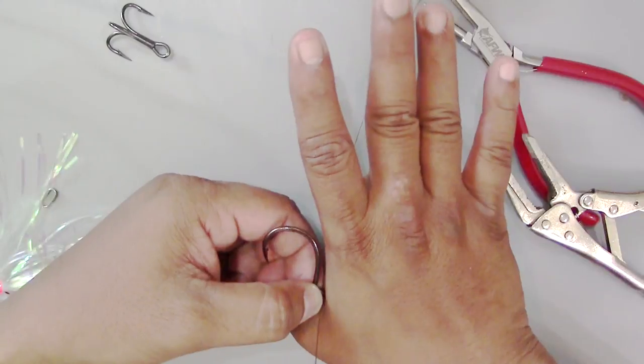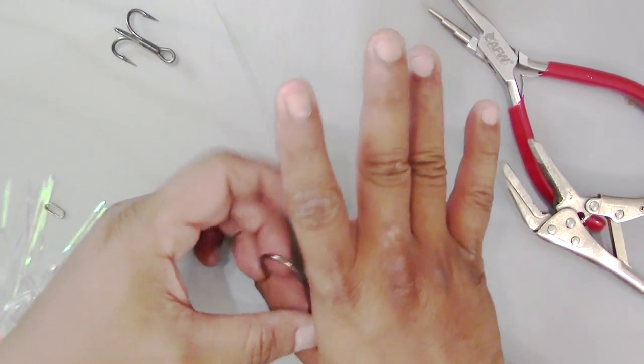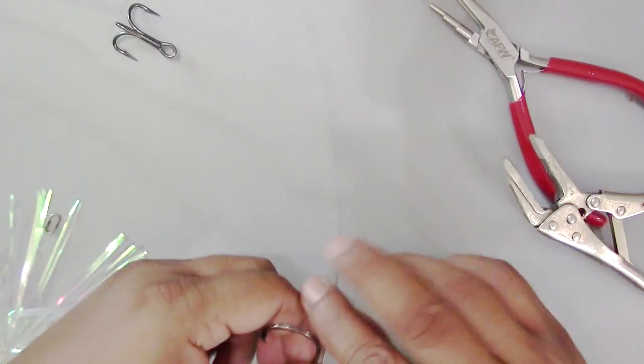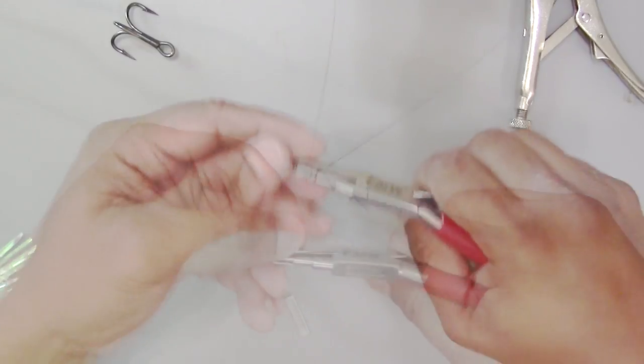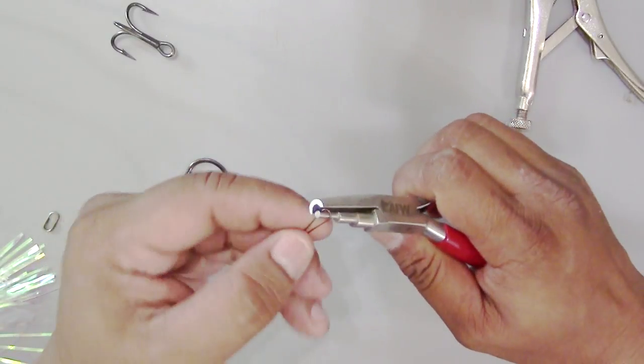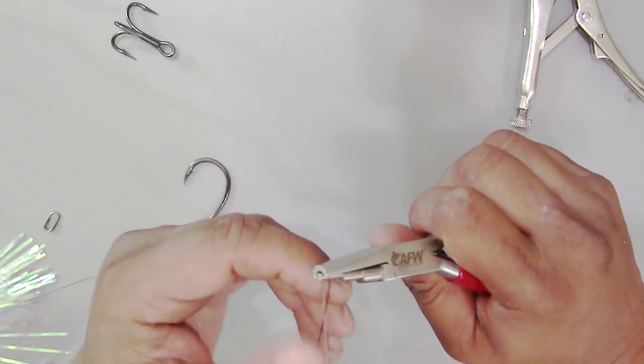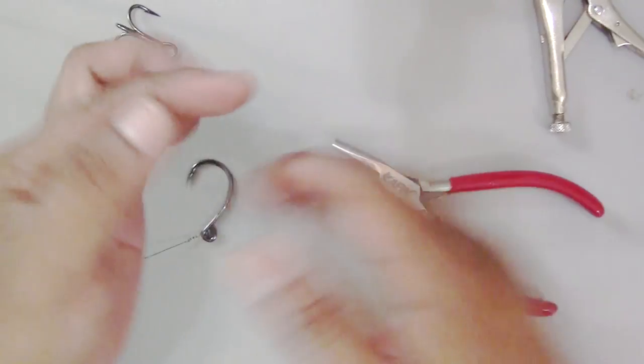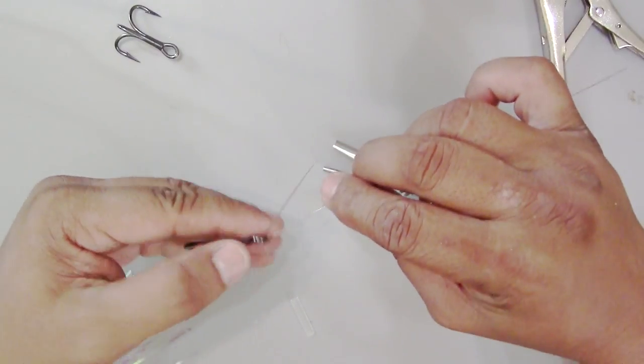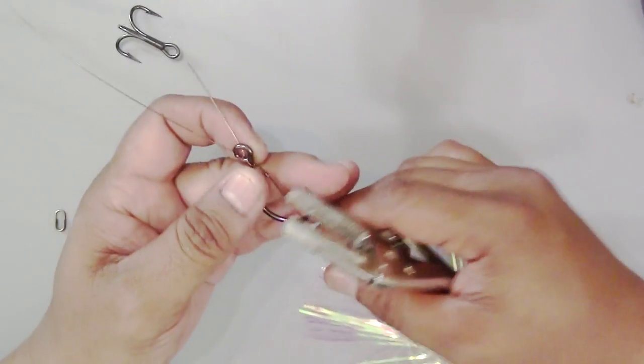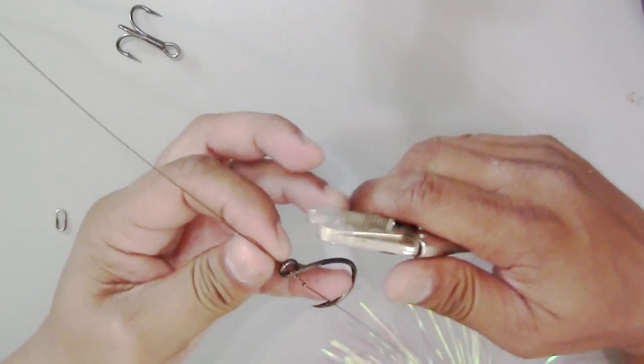I always use this eye former to make the shapes a bit better. There. Make sure that the eye going towards your leader is separate. It doesn't get mixed up. Make your haywire twist, and your barrel roll, or barrel wrap, whichever term you want to use.